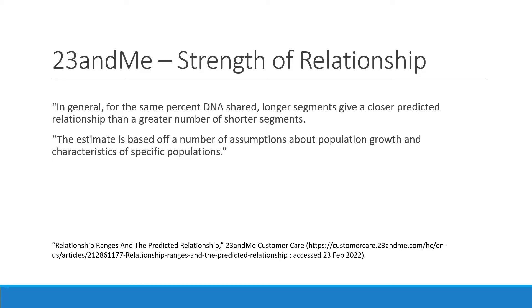The estimate is based on a number of assumptions about population growth and characteristics of specific populations. 23andMe does a lot of science in the background — they have a scientific article you can read linked from their customer care pages about how they determine predicted relationships. The strength of relationship sorting option puts everything in order by the relationship they've predicted, based on both the percent of DNA shared and segment length. So first cousins are listed first, then second cousins, then third and fourth cousins.